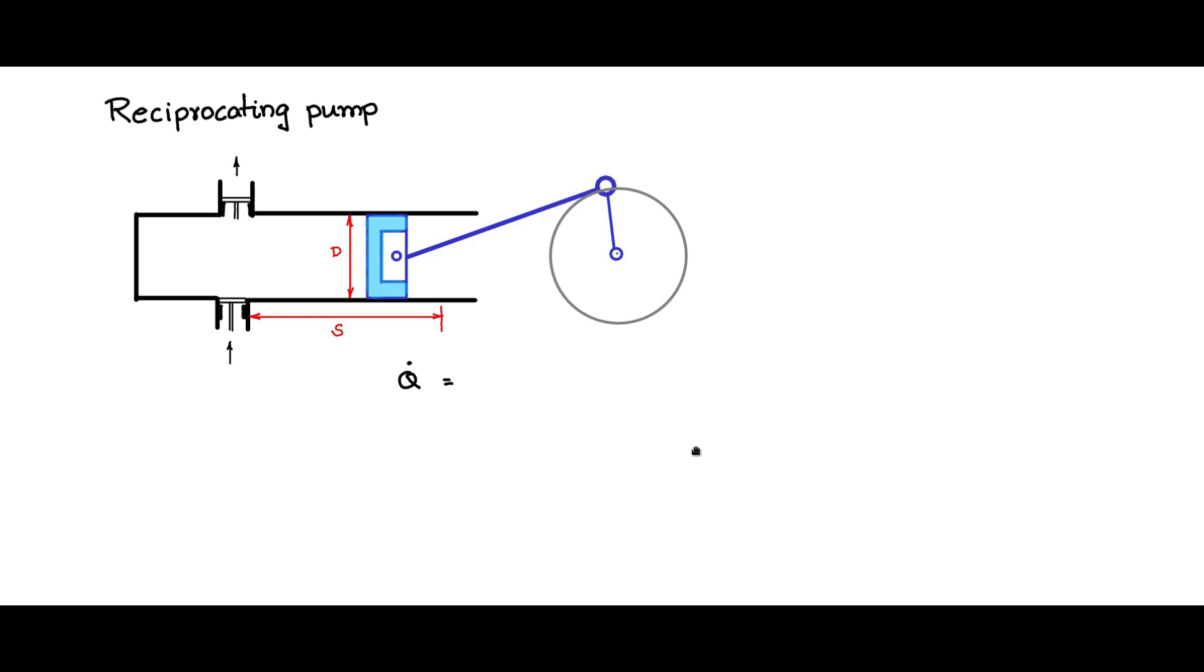Q dot is the discharge rate or the flow rate, and that is proportional to this area of the cylinder into the stroke length. That is the volume that it is going to displace into the number of strokes per second. It will be the discharge rate.